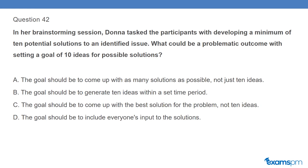Question 42: In her brainstorming session, Dana tasked the participants with developing a minimum of 10 potential solutions to an identified issue. What could be a problematic outcome with setting a goal of 10 ideas for possible solutions? A. The goal should be to come up with as many solutions as possible, not just 10 ideas. B. The goal should be to generate 10 ideas within a set time period. C. The goal should be to come up with the best solution for the problem, not 10 ideas. D. The goal should be to include everyone's input to the solutions.